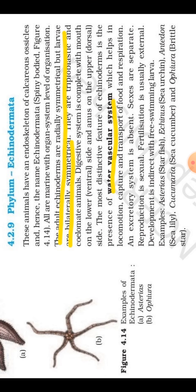Echinoderms — as we discussed earlier about symmetry — there are three phyla with radial symmetry: Coelentrata, Ctenophora, and the last was Echinodermata. So in Echinodermata, the adults are radially symmetrical. But the larval form is bilaterally symmetrical — so larva shows bilateral symmetry.